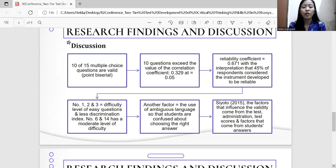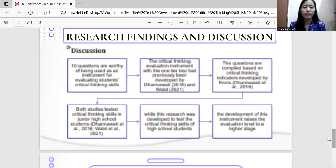Another factor is the use of ambiguous language so that students are confused about choosing the right answer. According to Sudaryono 2015, the factors that influence the validity come from the test administration, test scores, and factors that come from students' answers.